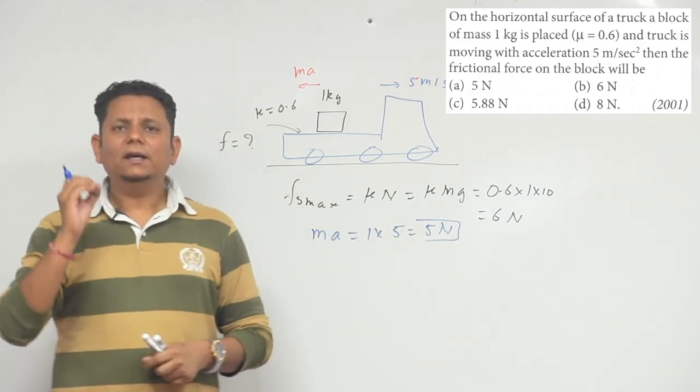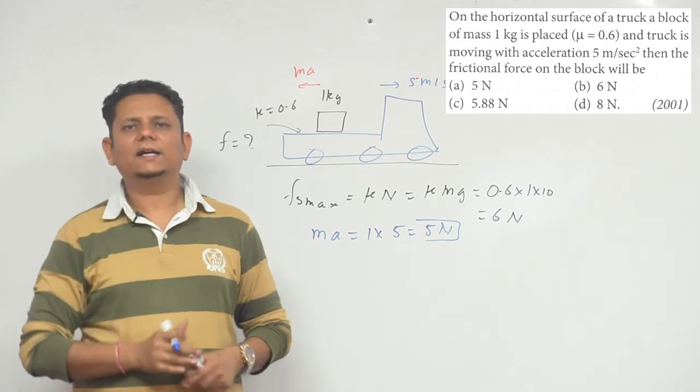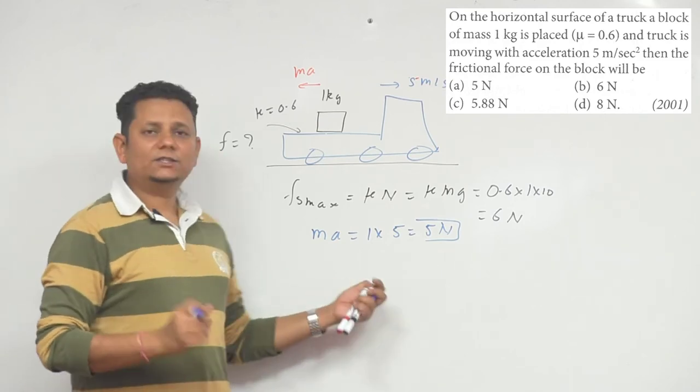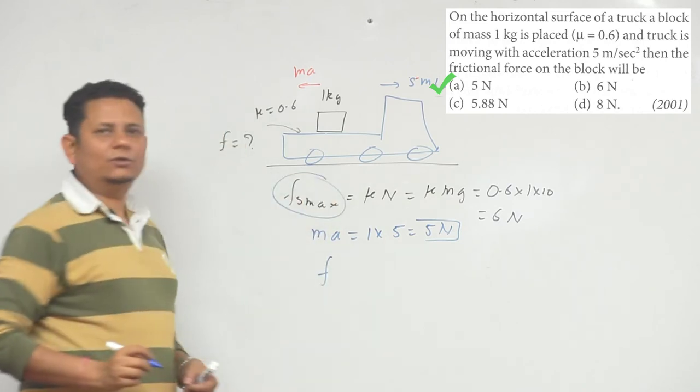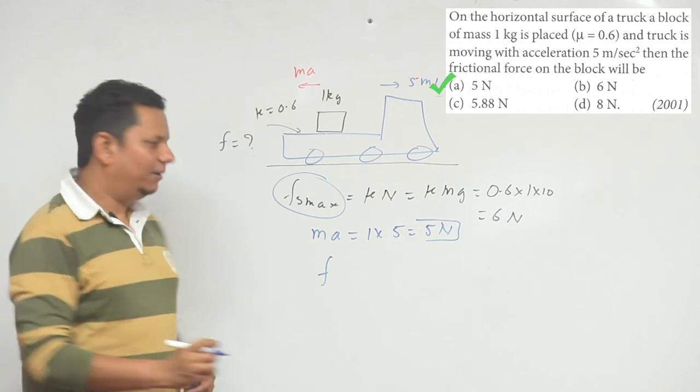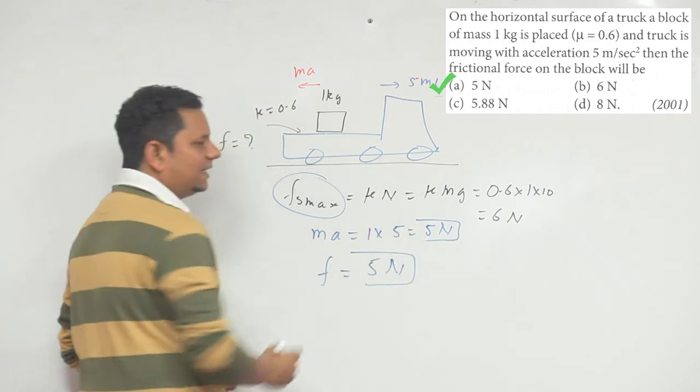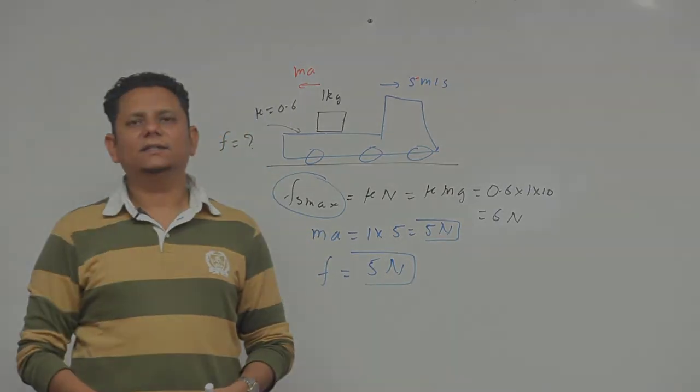Now the maximum friction force here is 6 newton. This means that until a force slightly greater than 6 newton is applied, this block will not move. So at this moment, the friction force is not the maximum possible force, but the friction force will be equal to the applied force, that is, friction force will be equal to 5 newton. So in this case we can say that option number A, 5 newton, would be the right answer.